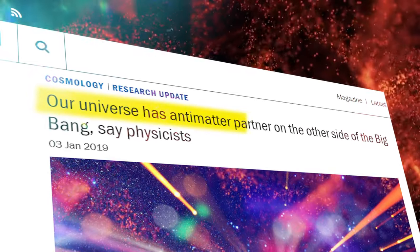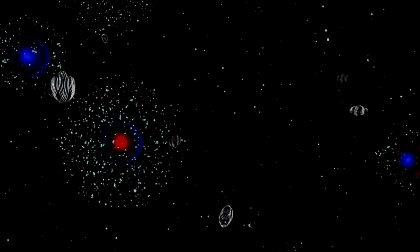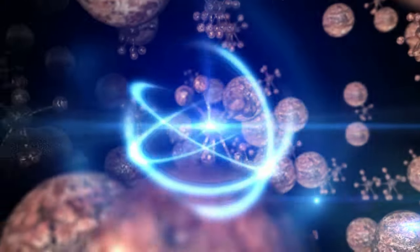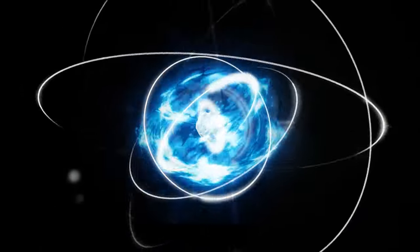Antimatter is real, even though it sounds like something from a science fiction novel. It refers to a particle made up of subatomic particles with the mass, electric charge, and magnetic moment of protons, neutrons, and electrons in regular matter, but the electric charge and magnetic moment have the opposite sign.